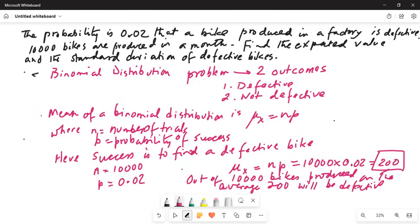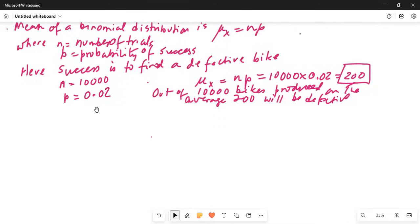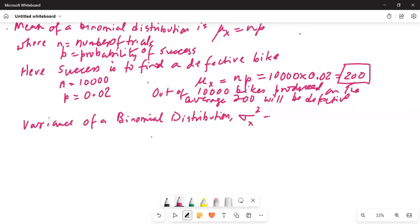Now, let's create some space. So that's the mean. What about the variance? Variance of a binomial distribution is σ_x squared is equal to n times p times q.